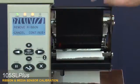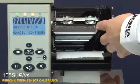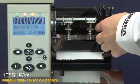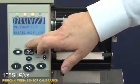The control panel will show remove ribbon. Move the ribbon to the side. Close the printhead. Press plus to begin calibrating the media.